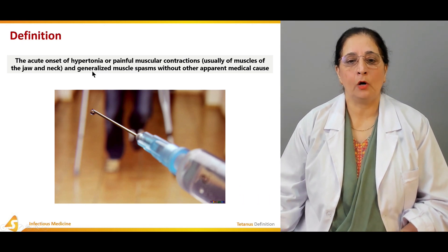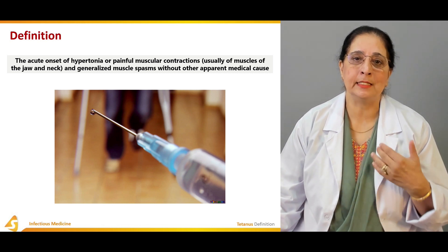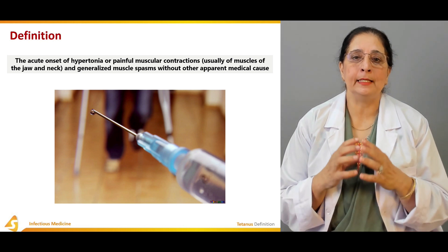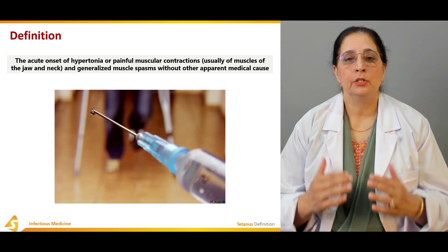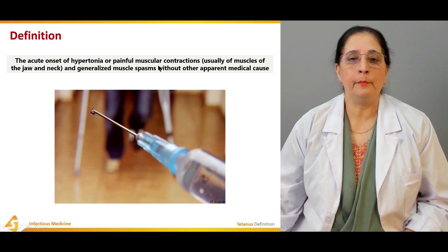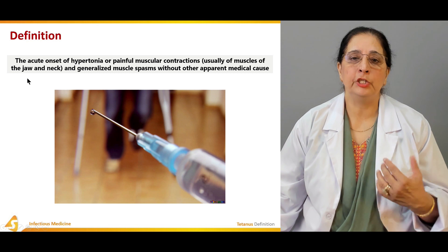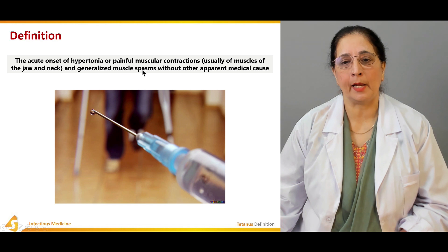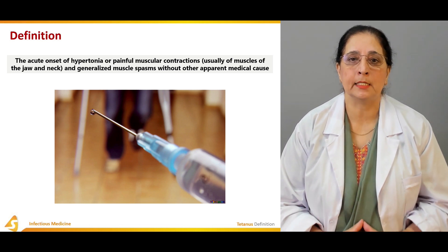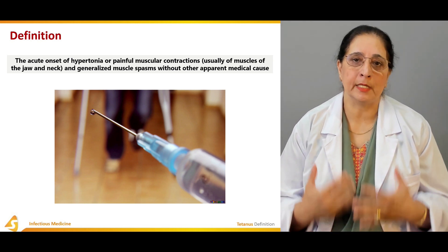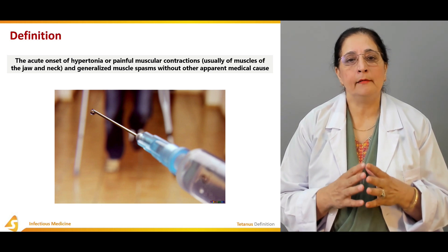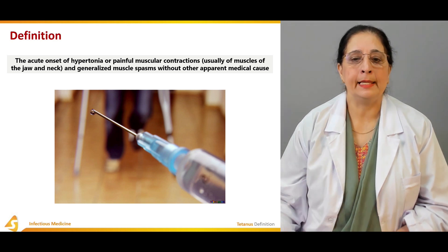In tetanus, there is acute onset of hypertonia — increased muscle tone — which leads to spasms. The muscles are in a hypertonic state and unable to relax after stretching. There is hypertonia with painful muscular contractions, usually of muscles of the jaw and neck, and generalized muscle spasm without other apparent medical cause. The muscles are in a state of constant contraction.